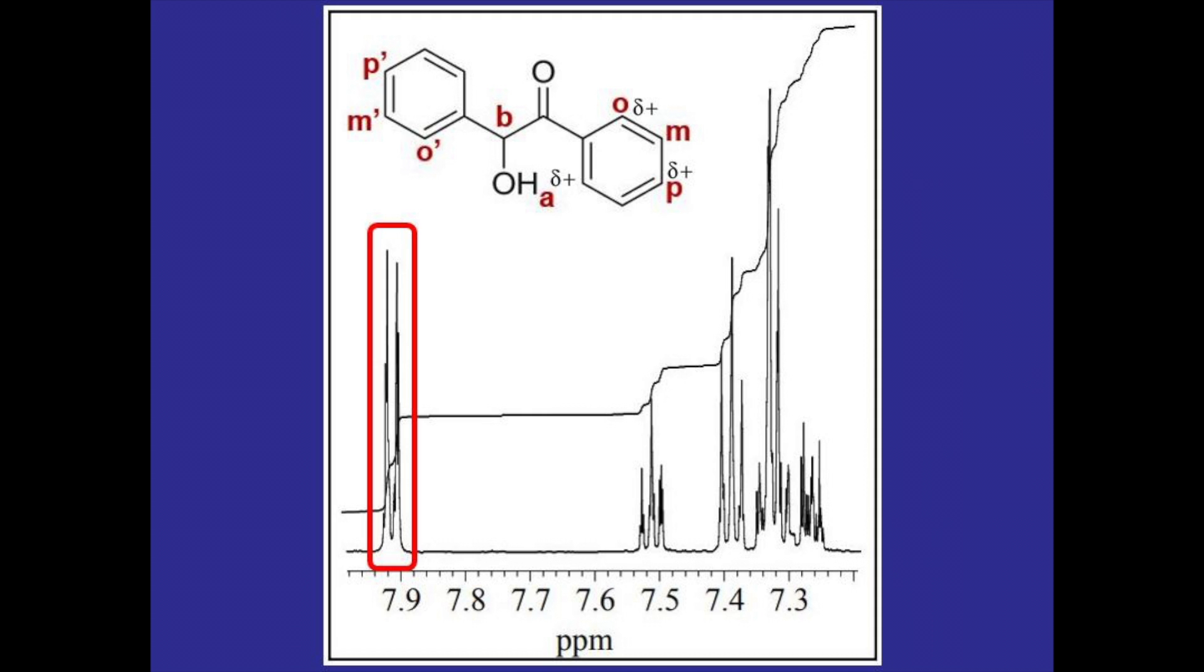And then I'm going to start with the most deshielded peak. It's a clear doublet with an integration that seems to be about twice as big as the smallest integration so most likely two and it's the most deshielded hydrogen so this has to be hydrogen O with that partial positive there.